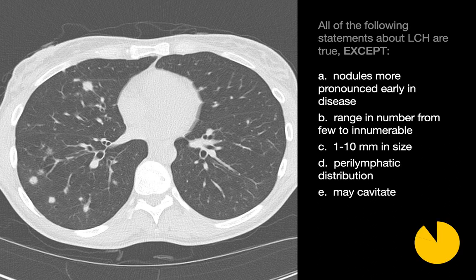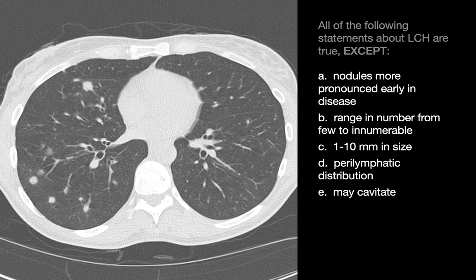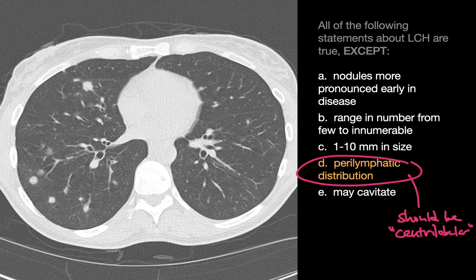All of the following statements about LCH are true except... Nodules are a feature of early phase LCH. We tend to see cysts more in the later stages of disease. These nodules can range in number from few to innumerable, and are generally subcentimeter in size, though they trend towards the upper size of that spectrum, and sometimes these nodules may cavitate. The incorrect statement here is perilymphatic distribution, since the distribution of nodules in PLCH is centrilobular.